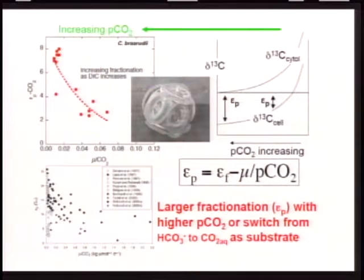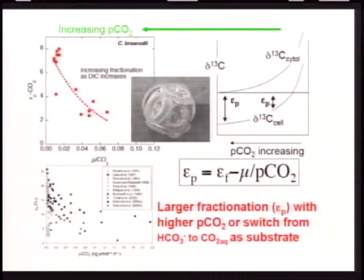We can also use these isotopes to interrogate the photosynthetic system. Coccolithus braarudii does exactly as we'd expect — with more carbon available, we'd expect a larger fractionation, and indeed as we have increasing pCO2, we see a larger isotopic fractionation of carbon isotopes going into the organic matter. A higher rate of supply of carbon allows for a greater isotopic fractionation to be expressed by Rubisco. This fits with a global compilation of how carbon isotopes change in organic matter.